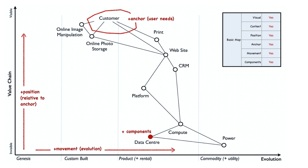The components of the map also have a stage of evolution, which is the horizontal axis. On the left, genesis represents the unique, the very rare, the uncertain, the constantly changing, and the newly discovered — our focus here is on exploration. Custom built represents the very uncommon, that which we're still learning about: individually made and tailored for a specific environment, bespoke, frequently changing, an artisan skill. Our focus here is on learning and our craft.